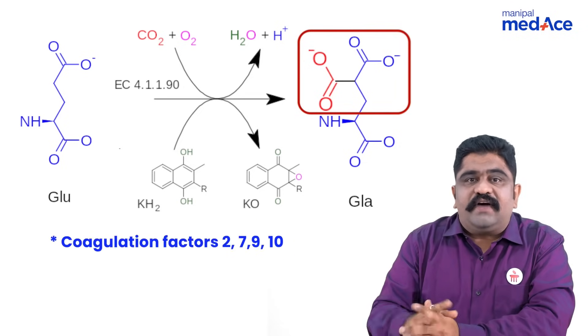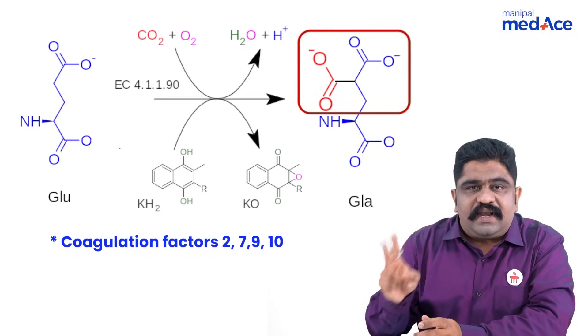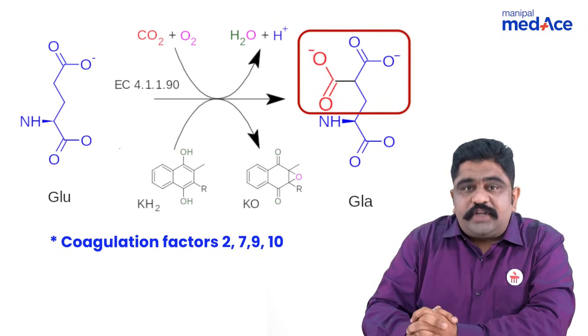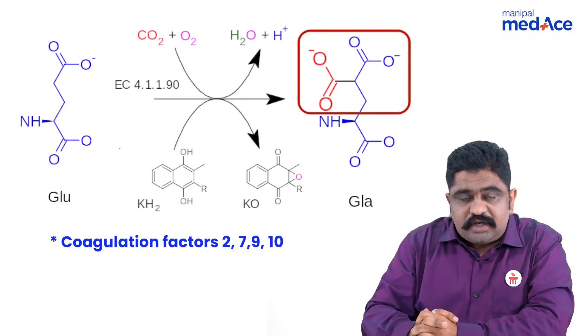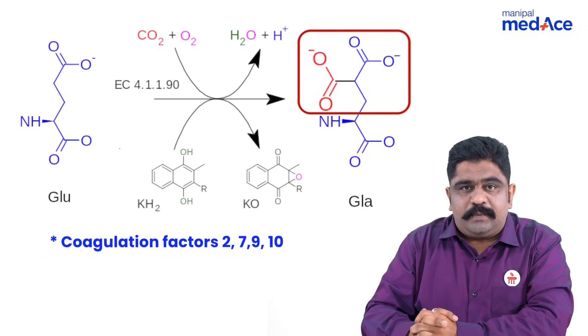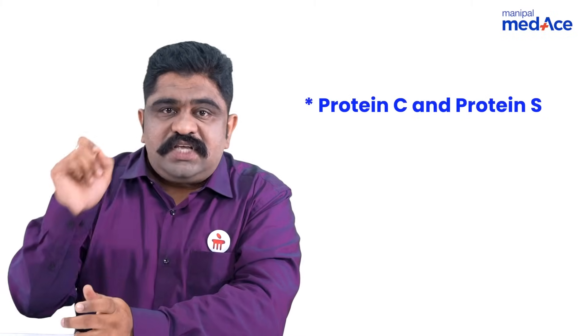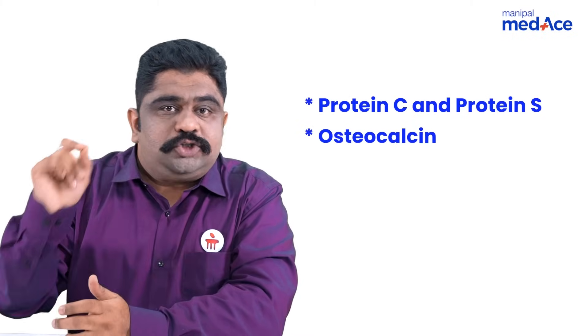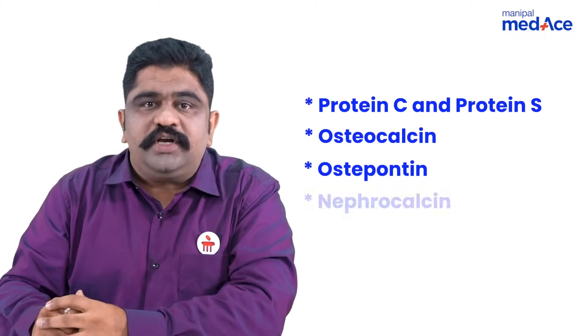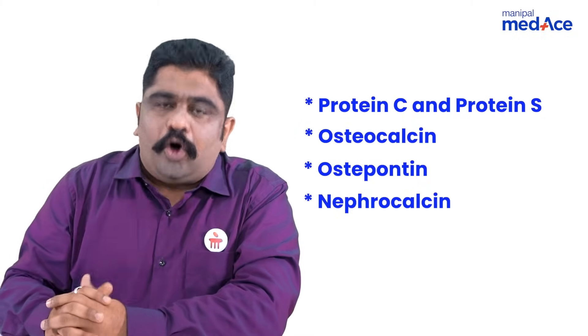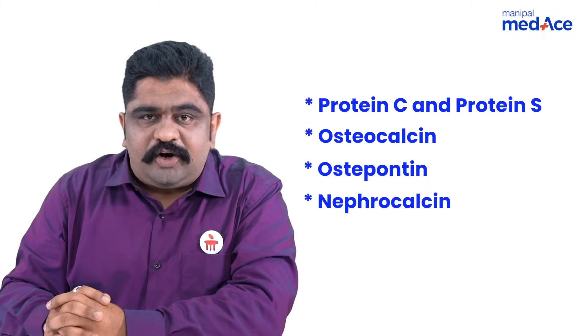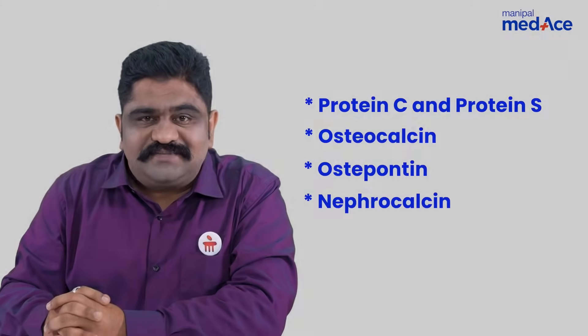So remember, in factors 2, 7, 9, and 10, for them to be activated, you require vitamin K. Apart from them, protein C, protein S, osteocalcin, osteonectin, osteopontin, and nephrocalcin — all of them are dependent on vitamin K.